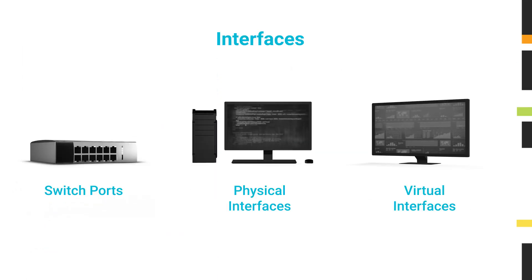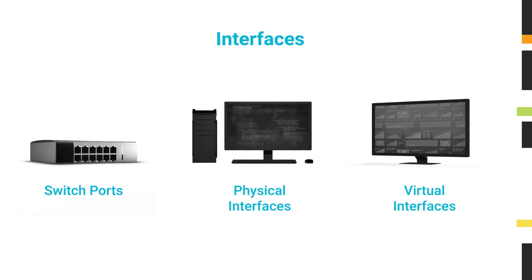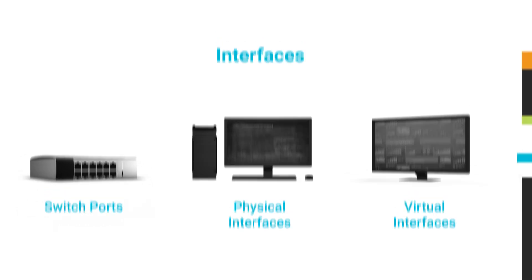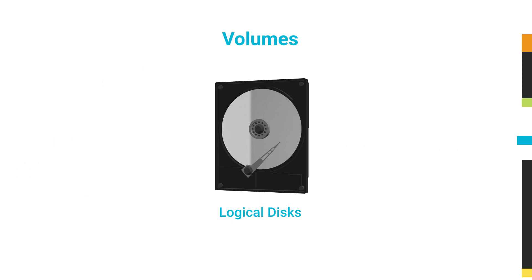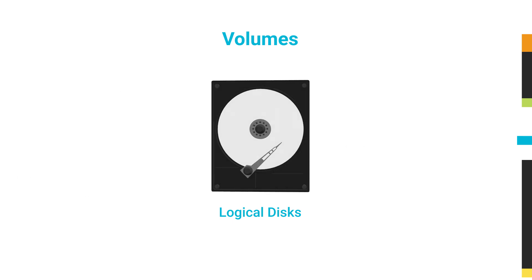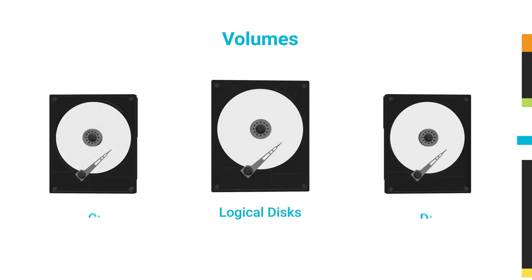Interfaces include switch ports, physical interfaces, virtual interfaces, and any other single point of network traffic. Volumes are equivalent to the logical disks you are monitoring. For example, the C and D drives would count as two elements.